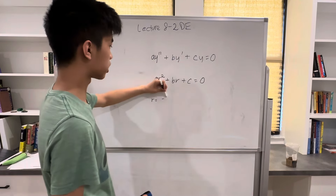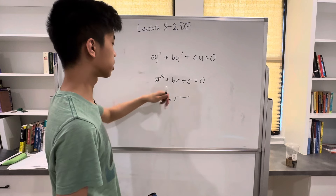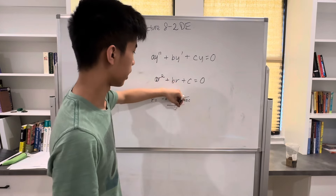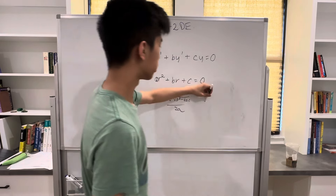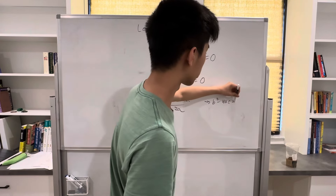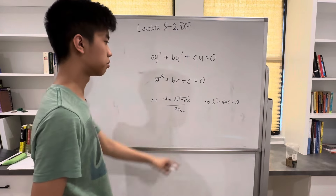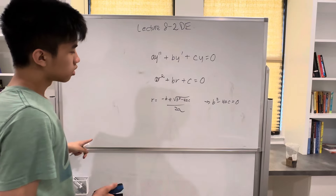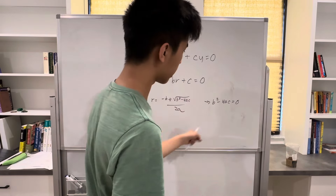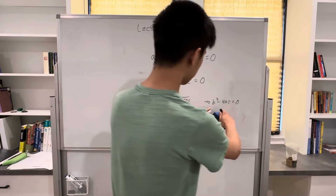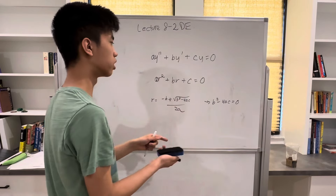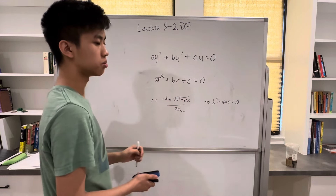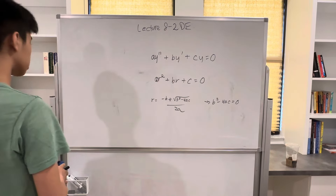Using the quadratic formula we get r = (-b ± √(b² - 4ac)) / 2a. We're trying to find the solutions when b² - 4ac = 0. If b² - 4ac = 0, then we're going to get the same root twice, which means we're going to have a solution of order 2.